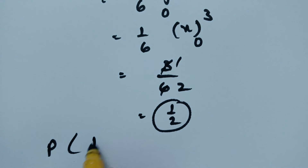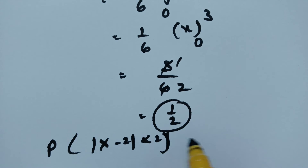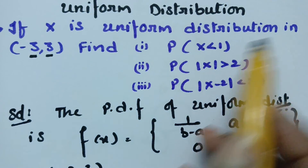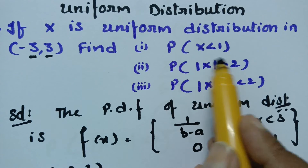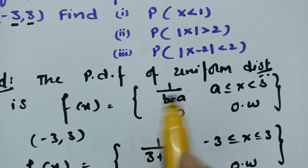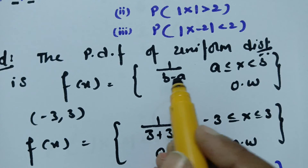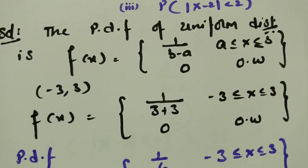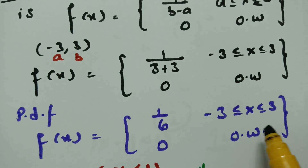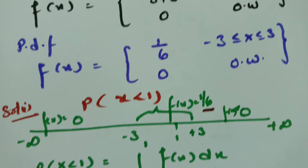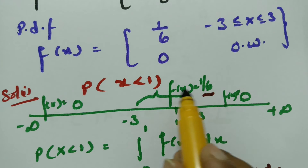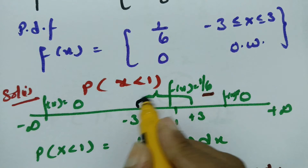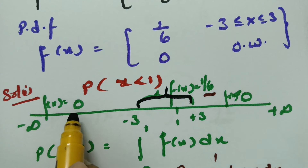To summarize: X is uniformly distributed on (-3, 3), so f(x) = 1/6 for -3 ≤ x ≤ 3 and 0 otherwise. The three results are: P(X < 1) = 2/3, P(|X| > 2) = 1/3, and P(|X - 2| < 2) = 1/2.